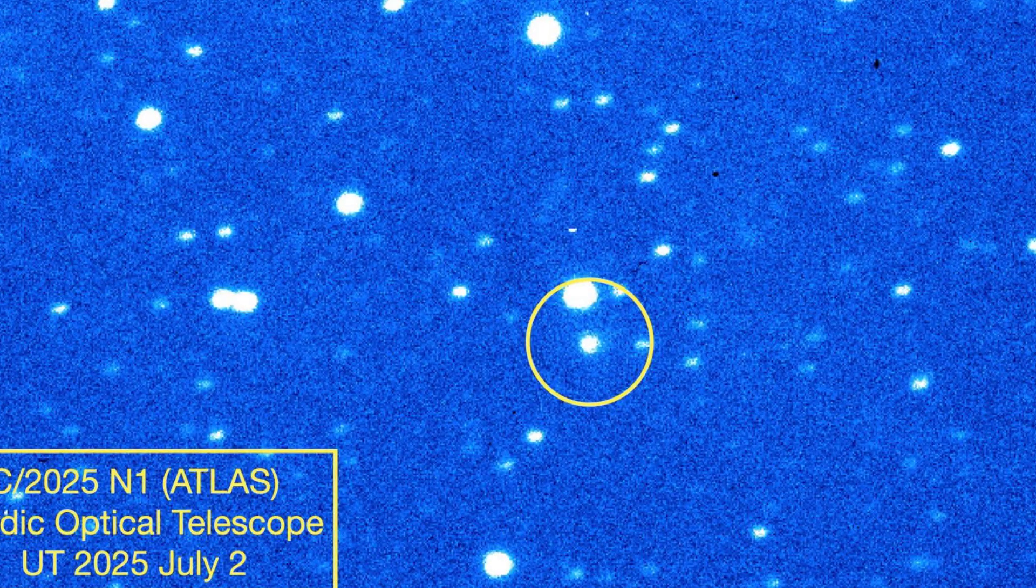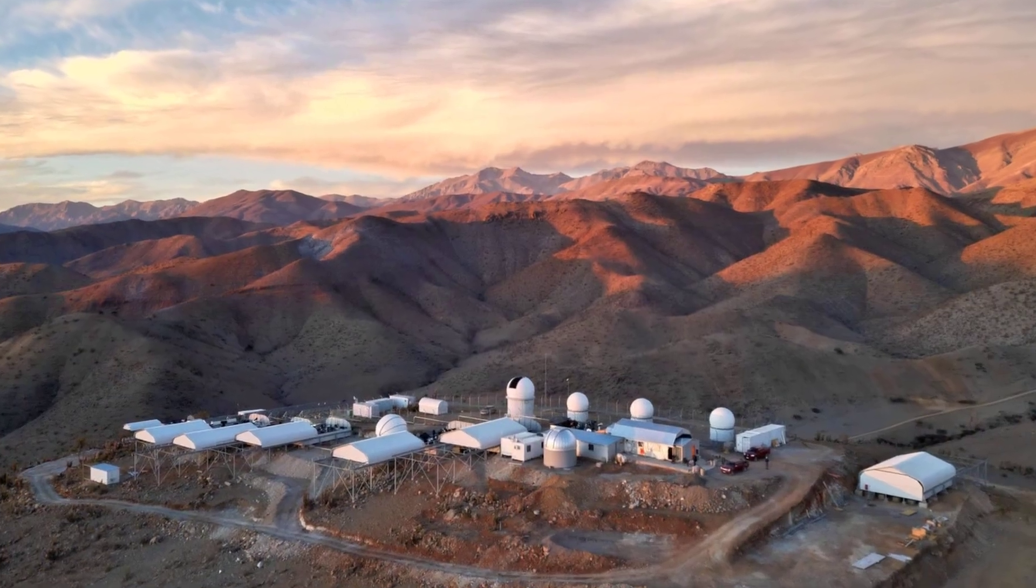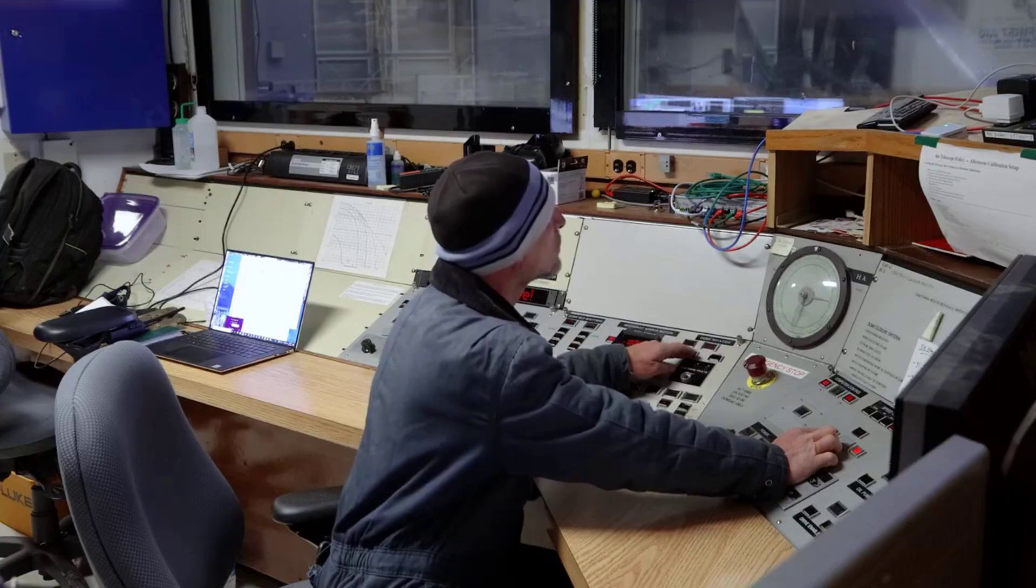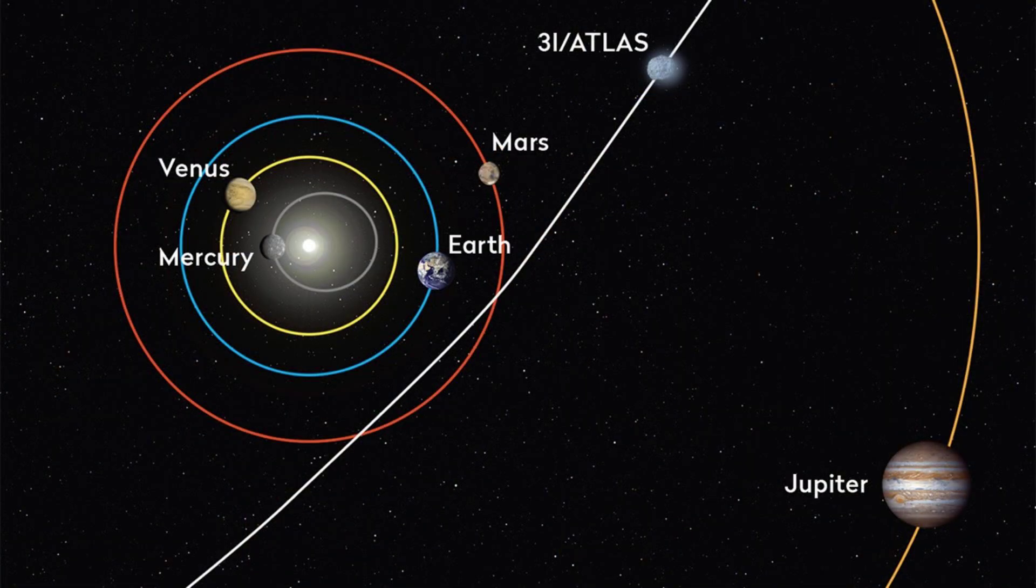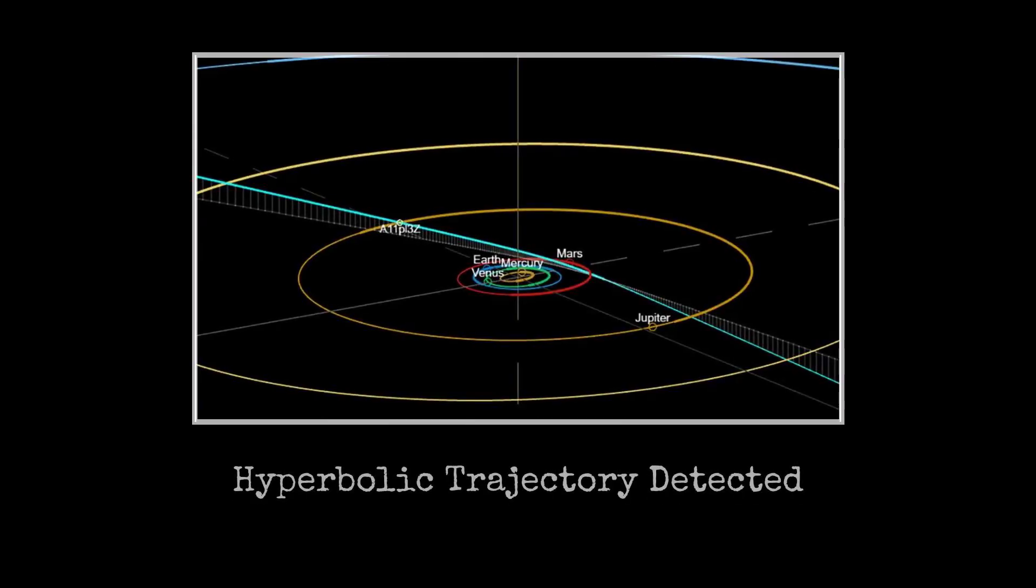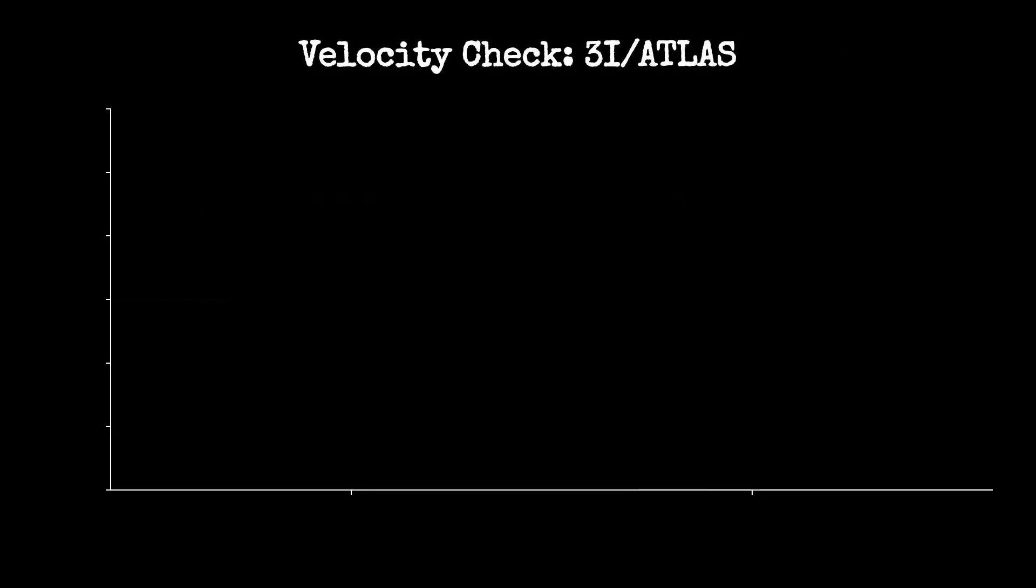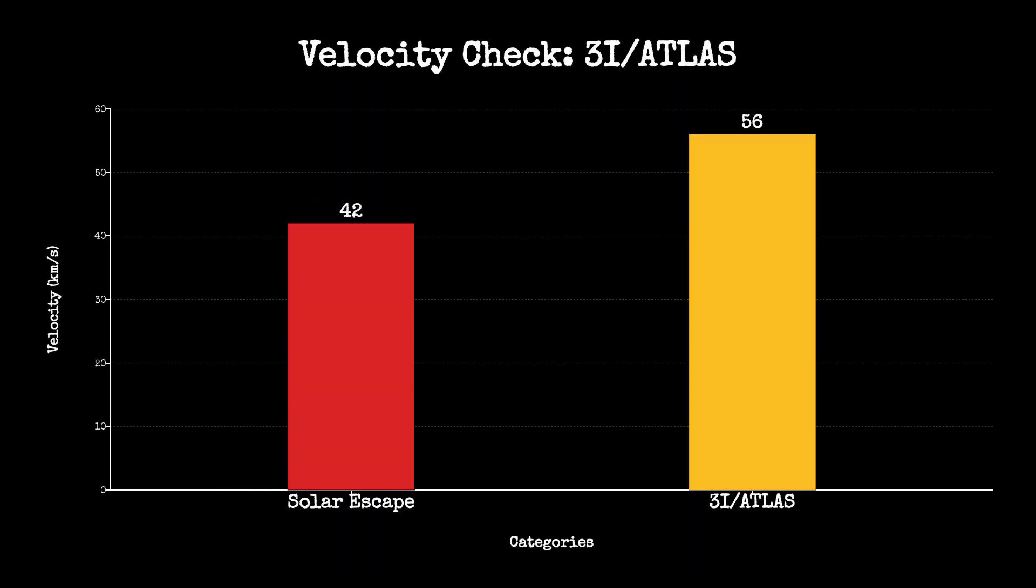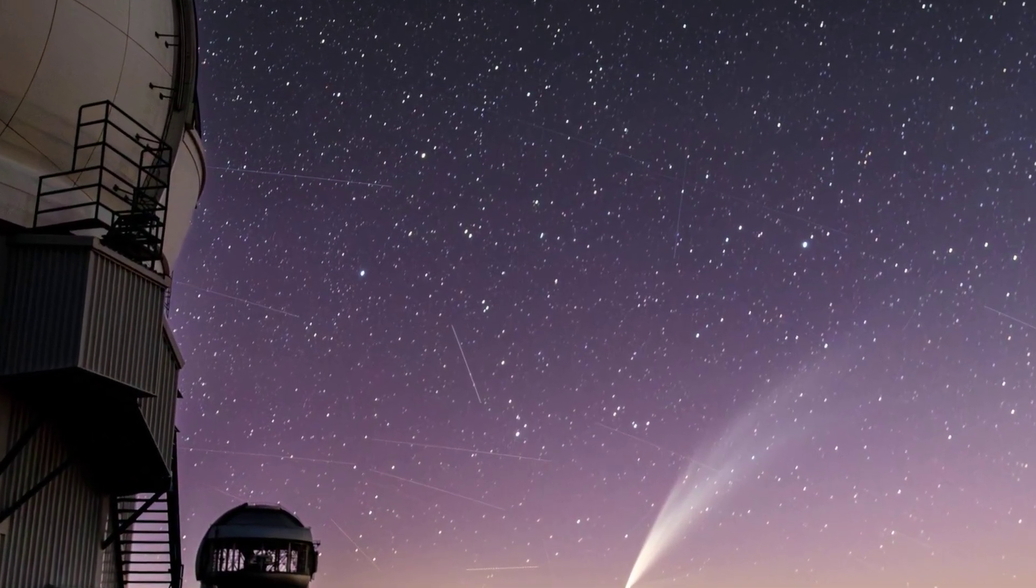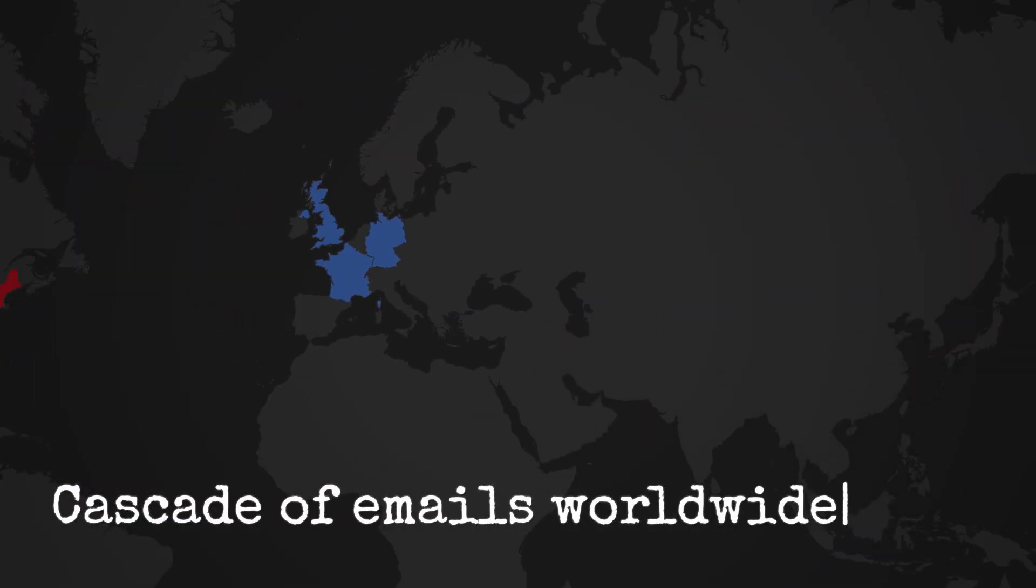On the evening of July 1, 2025, a faint streak appeared in the data stream from the Atlas Telescope in Rio Hurtado, Chile. The observer on shift flagged it as unusual; its path didn't match any known asteroid or comet. Within minutes, the system calculated a trajectory that was not just steeply inclined but hyperbolic, indicating the object was moving too fast to be bound by the Sun. The alert triggered a rapid sequence: confirmation from a second Atlas facility, then a cascade of emails to survey teams and planetary scientists worldwide.